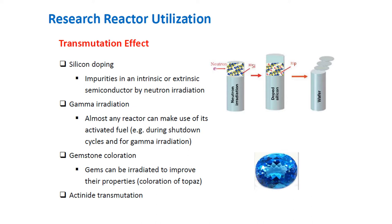NTD technology is a preferential method for the production of extremely high-quality silicon semiconductors due to its extremely uniform dopant concentration. As a result, the demand for NTD of silicon has become an internationally significant commercial opportunity. Gamma radiation can also be readily developed with a relatively small investment at a research reactor — for example, for irradiating plants and seeds.